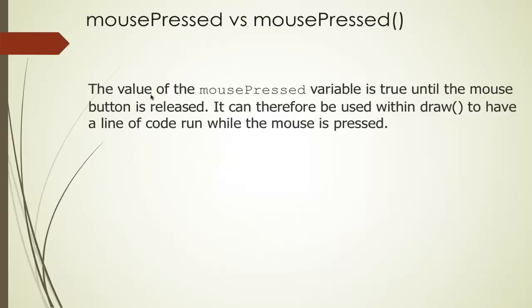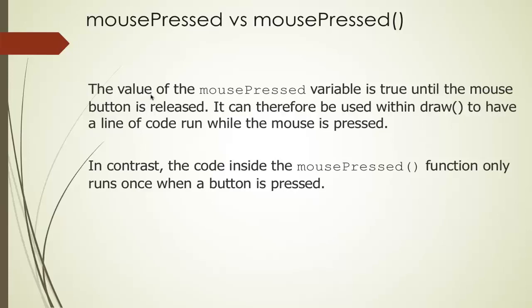A couple of things I want to clarify — the mousePressed variable versus the mousePressed method. It's a bit confusing. The value of the mousePressed variable is true until the mouse button is released, meaning if I press and hold it, mousePressed will be true the whole time. However, the mousePressed function runs only once whenever I press a button. So if I press and hold, mousePressed is called only once. If I release it and press again, the mousePressed function is called again.